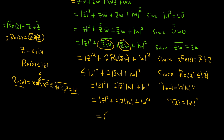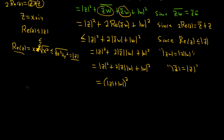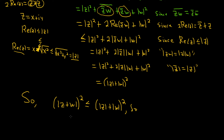So putting it all together, this equals modulus of z squared plus two times modulus of z times modulus of w plus modulus of w squared, which is the quantity modulus of z plus modulus of w, all squared. So we've shown the modulus of z plus w squared is less than or equal to that. Taking the square root of both sides, we get modulus of z plus w is less than or equal to modulus of z plus modulus of w. That completes the proof of the triangle inequality.